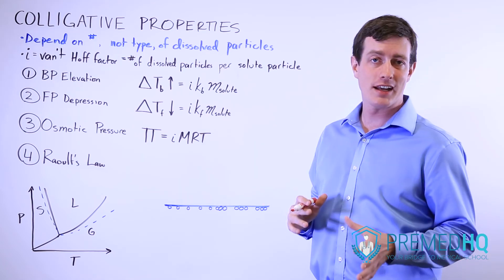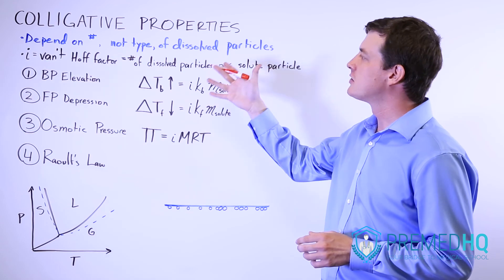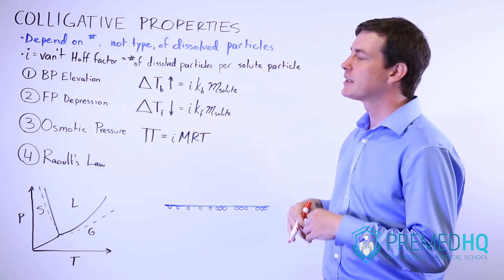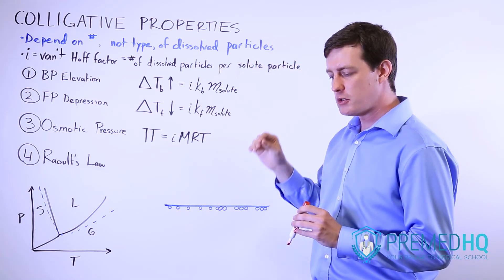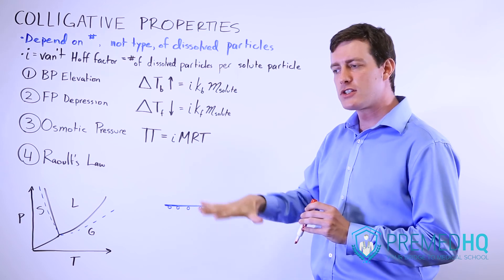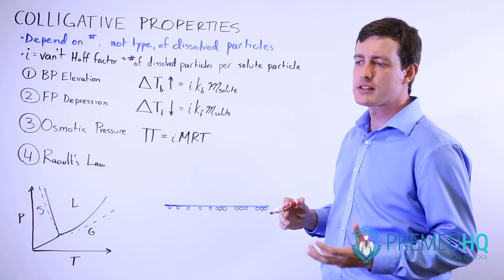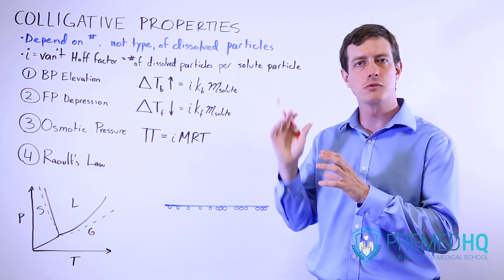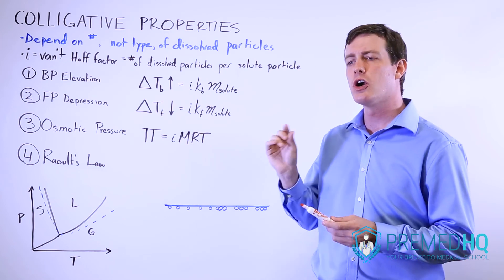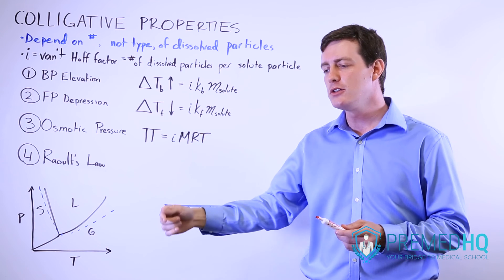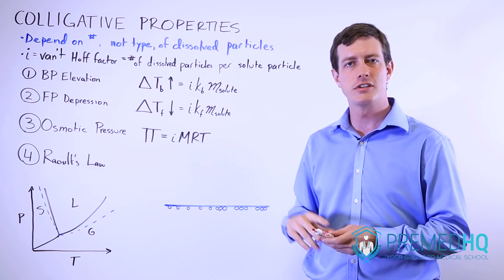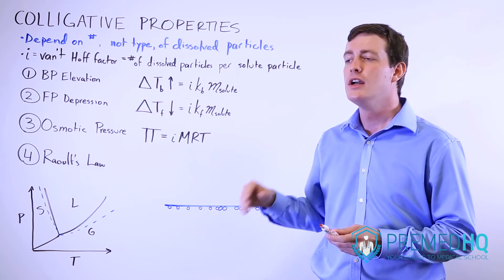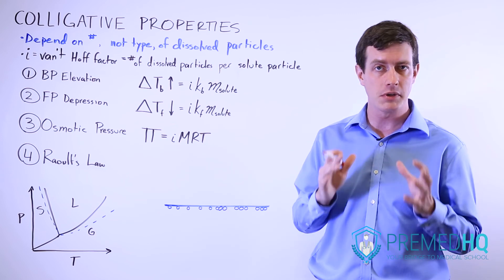In order to understand colligative properties, you have to introduce yourself to a quantity known as the Van't Hoff factor, or i. It corrects for the number of solute particles you put in versus the number of dissolved particles that produces. For example, calcium chloride, CaCl2, is a salt with one calcium and two chloride ions. You put in one calcium chloride but yield three different dissolved particles: a Ca2+ ion and two Cl- ions. So the Van't Hoff factor for CaCl2 is three.